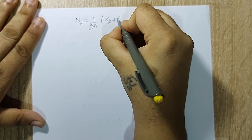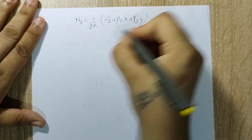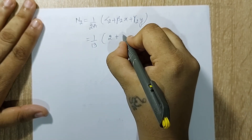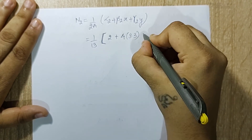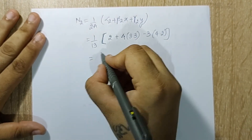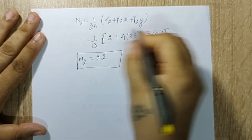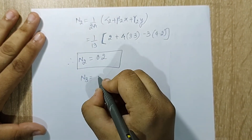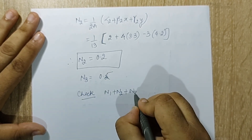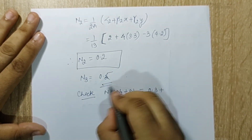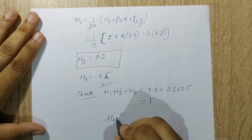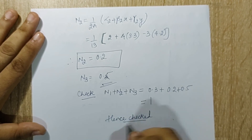Next I write down n2: 1 upon 13 times (alpha 2 plus beta 2·x plus gamma 2·y). Alpha 2 is 2, beta 2 is 4, x is 3.3, gamma 2 is minus 3, and y is now 4.2. Solving gives n2 as 0.2. By the same substitution, n3 is 0.5. Checking: n1 plus n2 plus n3 is 0.3 plus 0.2 plus 0.5, which equals exactly 1. Hence my solution is checked and tallied.